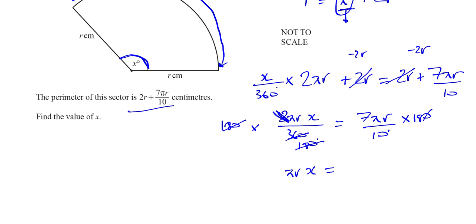7 times 18 is going to be 70 plus 56, which is 126πr. So we're left now to find where x is. x is 126πr over πr. πr cancels and you're left with x equals 126 degrees.